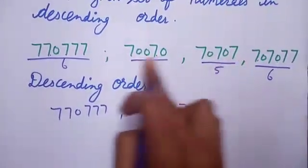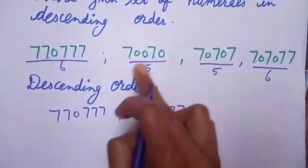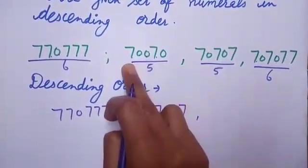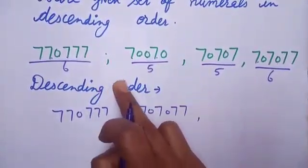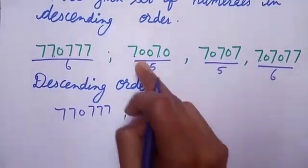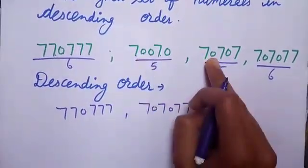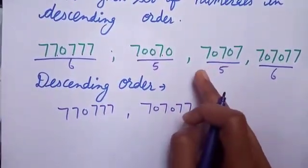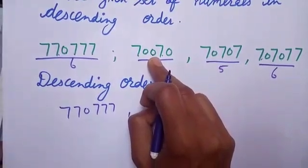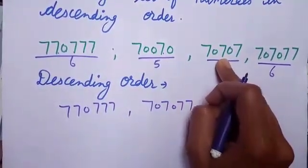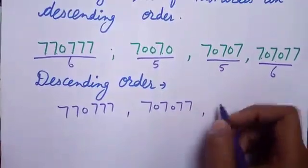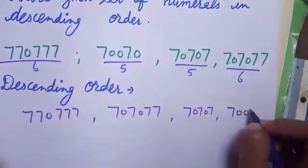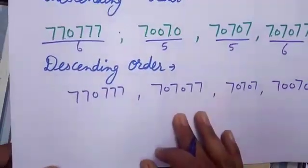Now I want to arrange the 5-digit numerals. I will compare the digit at the 10,000 place — it is the same. Then I will compare the digit at the 1,000 place: here 0 is at the 1,000 place and here 0 is at the 1,000 place — both are the same. Then I will compare the digit at the 100 place: here 0 is at the 100 place and here 7 is at the 100 place. So firstly I will write this number, then this one. I can also write this descending order using this symbol.